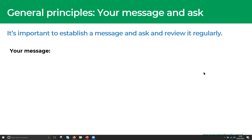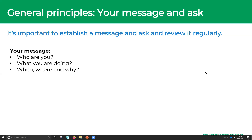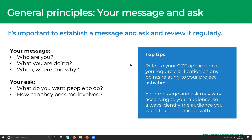In establishing your message and ask, include who you are, what you're doing, and where, when, and why you're doing it — that gives people the information they need. The second part, which is really important, is your ask: tell people how you want them to become involved in your project. If you're a CCF-funded project, refer to your application for clarification on your project activities. Remember, your message and ask may vary according to your audience, so always identify the audience you want to communicate with.